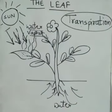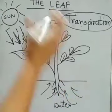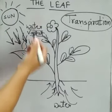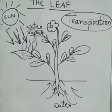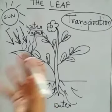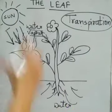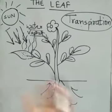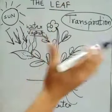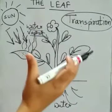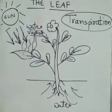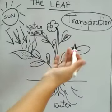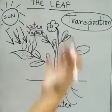During the process of transpiration, the excess water present in the plant is lost into the air as water vapor. Plants release a lot of water vapor into the air through transpiration. This water vapor goes up into the sky and forms clouds, and when these clouds become too heavy, they come down to the earth in the form of rain. So this water vapor in air helps in bringing rain.